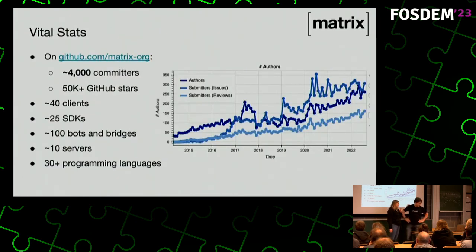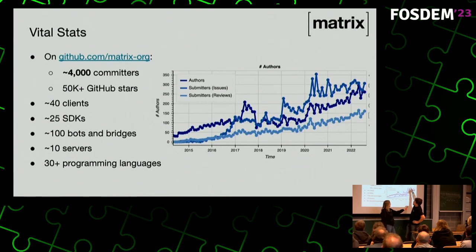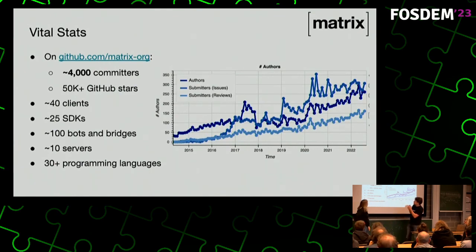For vital stats, we used Cauldron.io — you give it a GitHub or GitLab organization, it spiders the whole thing, puts it in Elasticsearch, and gives you credentials to explore. Looking at data from 2014, tracking committers, issues, and reviews — we're not sure what happened with reviews in 2020, but there was apparently a mad reviewing frenzy. We have 4,000 committers, and if you sum all GitHub stars across the Matrix organization it comes to over 50,000, with no double counting.